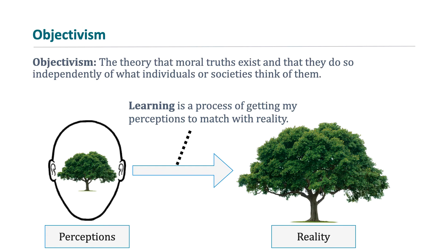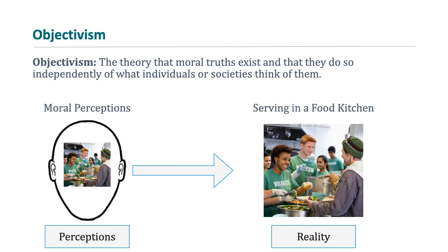We don't just say that trees are in the eye of the beholder — people have perceptions of trees because there are trees in the objective real world. If we take that concept and apply it to ethics, we can ask whether our moral perceptions correspond to anything real going on in the world. Just like people have five physical senses — seeing, taste, hearing, touch — a moral objectivist might argue that we also have a moral perception or moral sense. So when we see people serving in a food kitchen,